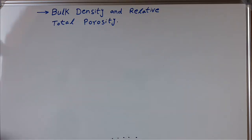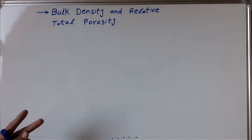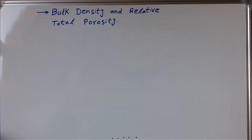I am going to explain how to calculate bulk density by solving an example. Let's say we have a cylinder. In that cylinder we have soil or concrete — it's up to you which kind of material you are going to use. You can use both concrete or soil.